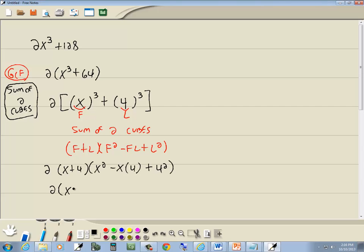Which gives us 2 times x plus 4 times x squared minus 4x plus 16. And that's our answer.